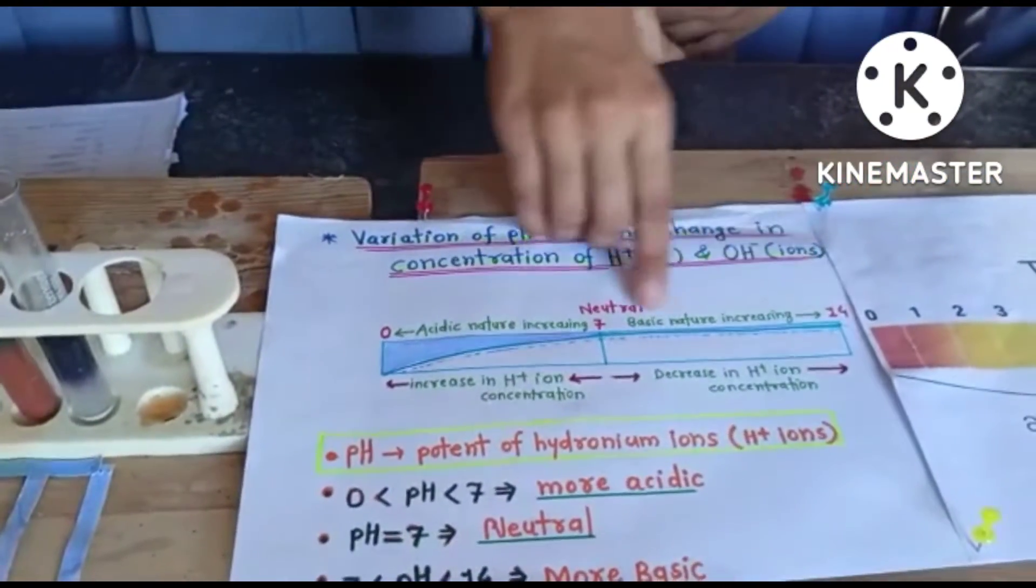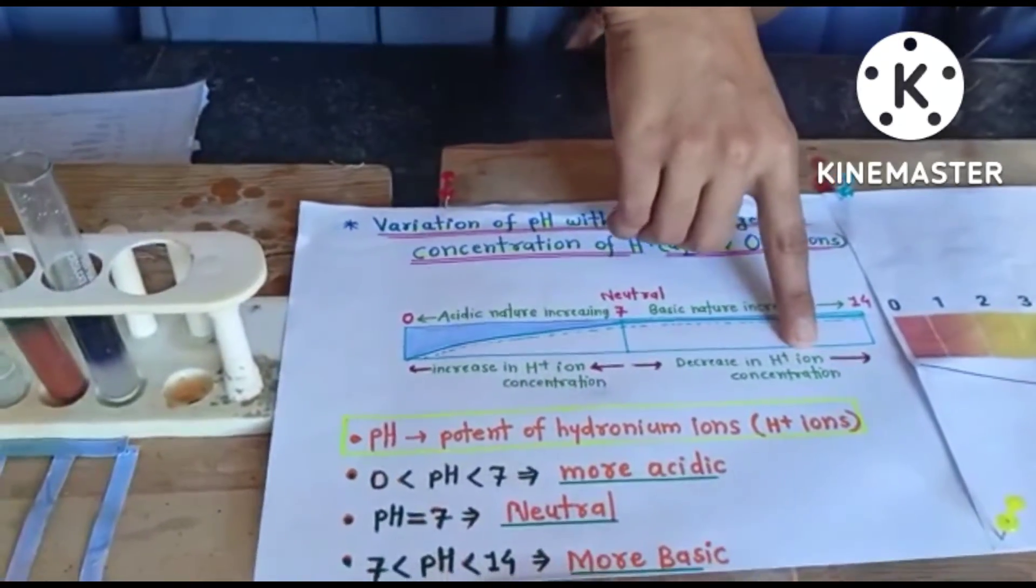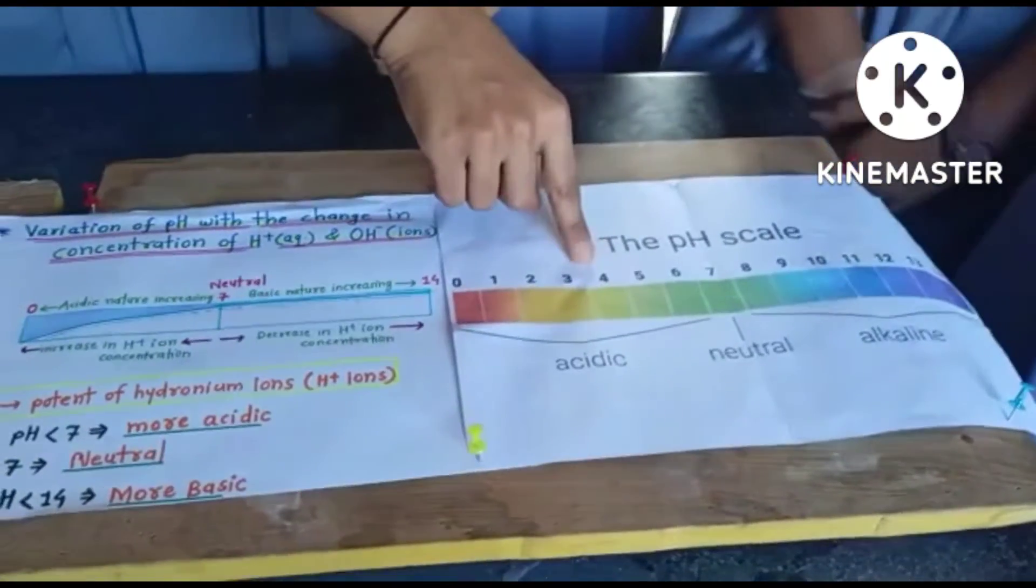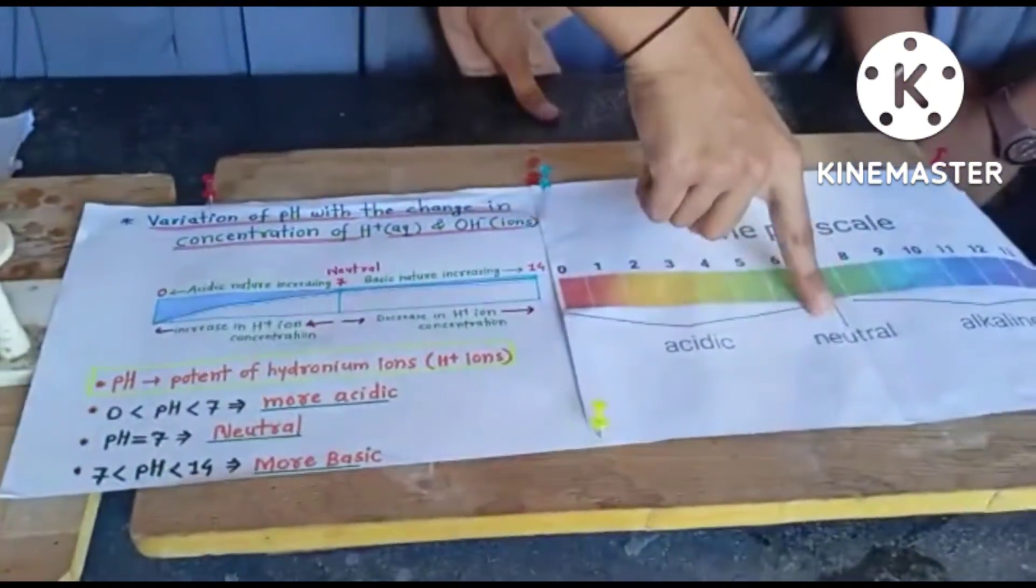As we go from 7 to 14, the basic nature increases and there is a decrease in the H+ ions. This is the pH scale. Here we can match the color of the solutions and find whether the substance is acidic, neutral, or alkaline.